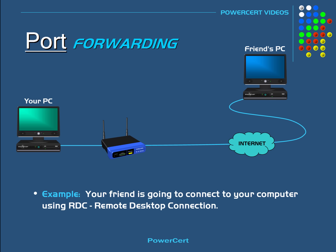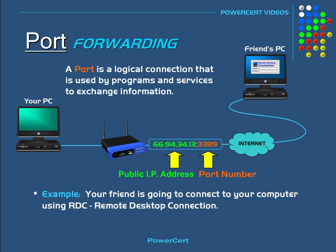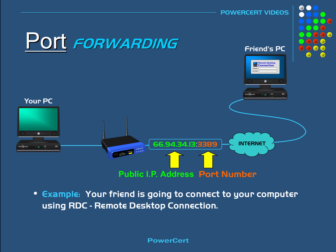So now your friend is ready to connect to your computer. He starts up the Remote Desktop Connection and sends the request to your public IP address with a specific port number. A port is not a physical connection but a logical connection that is used by programs and services to exchange information. Ports uniquely identify the programs and services running on a computer. In this case, Remote Desktop Connection uses port 3389.